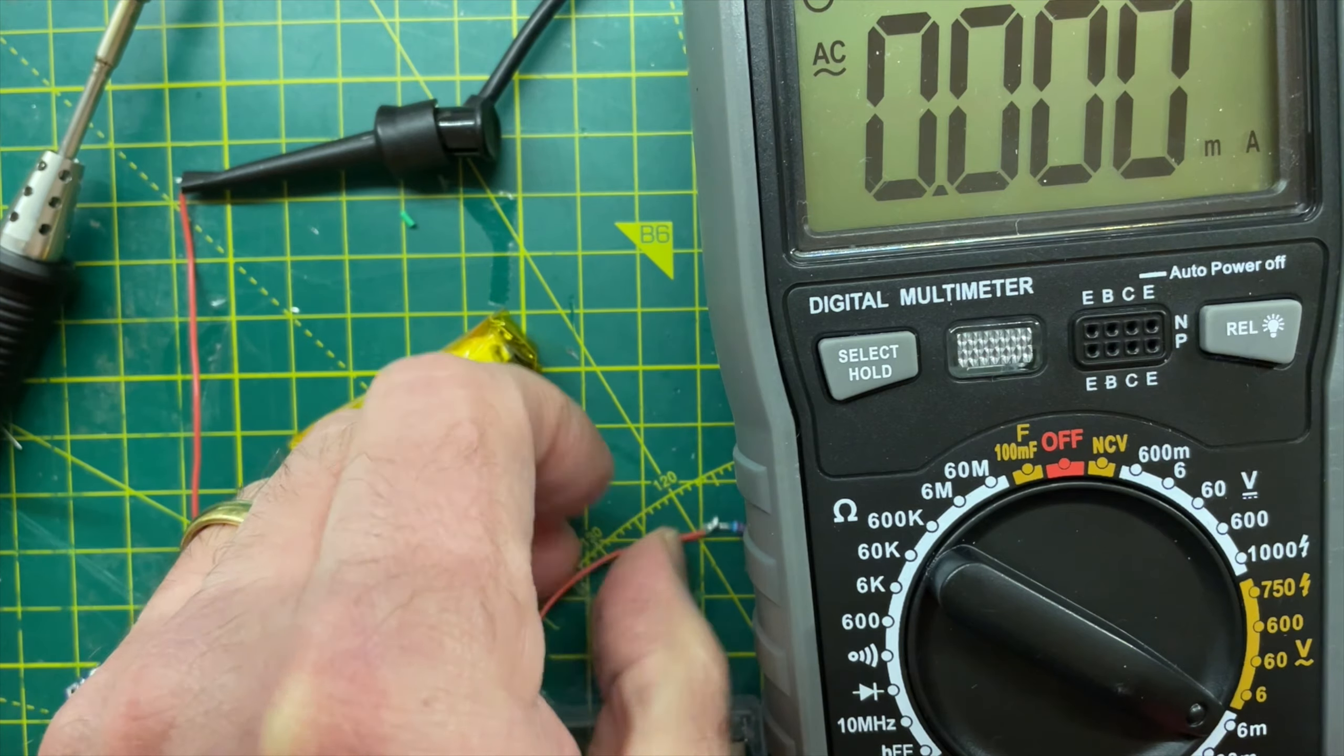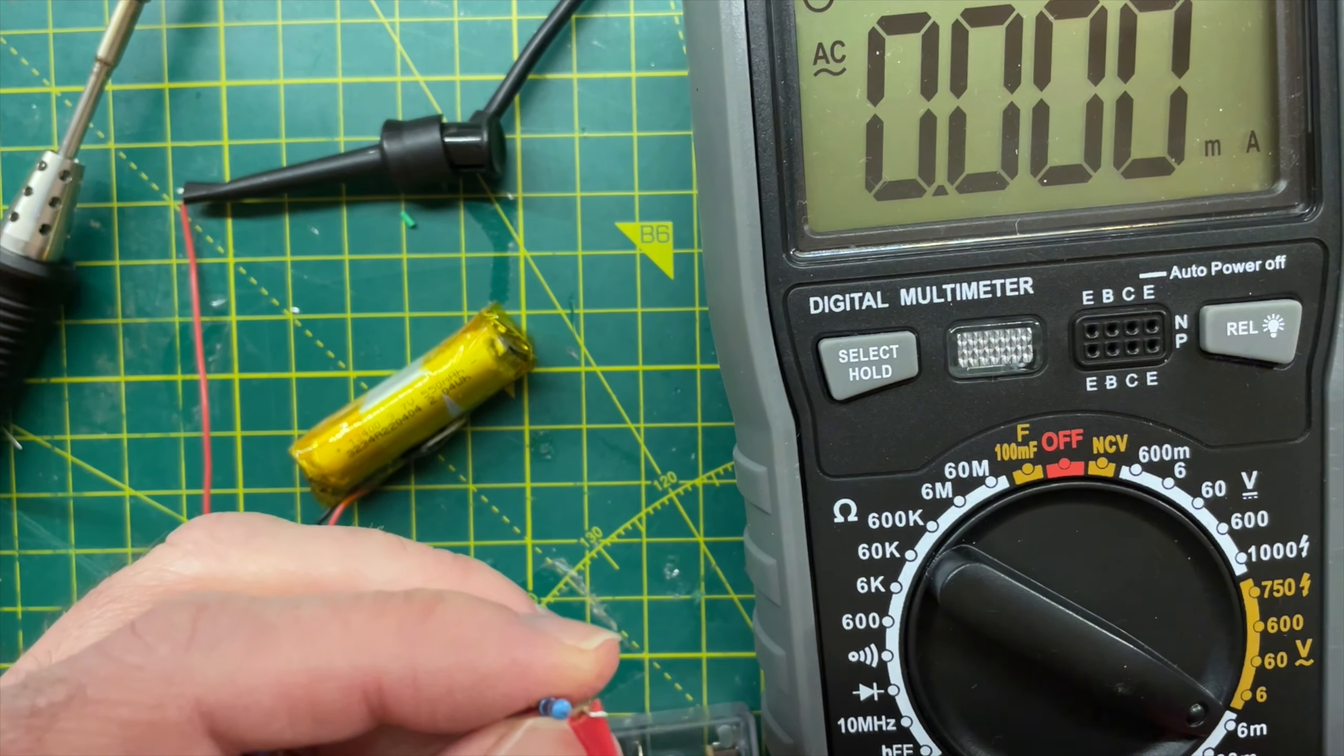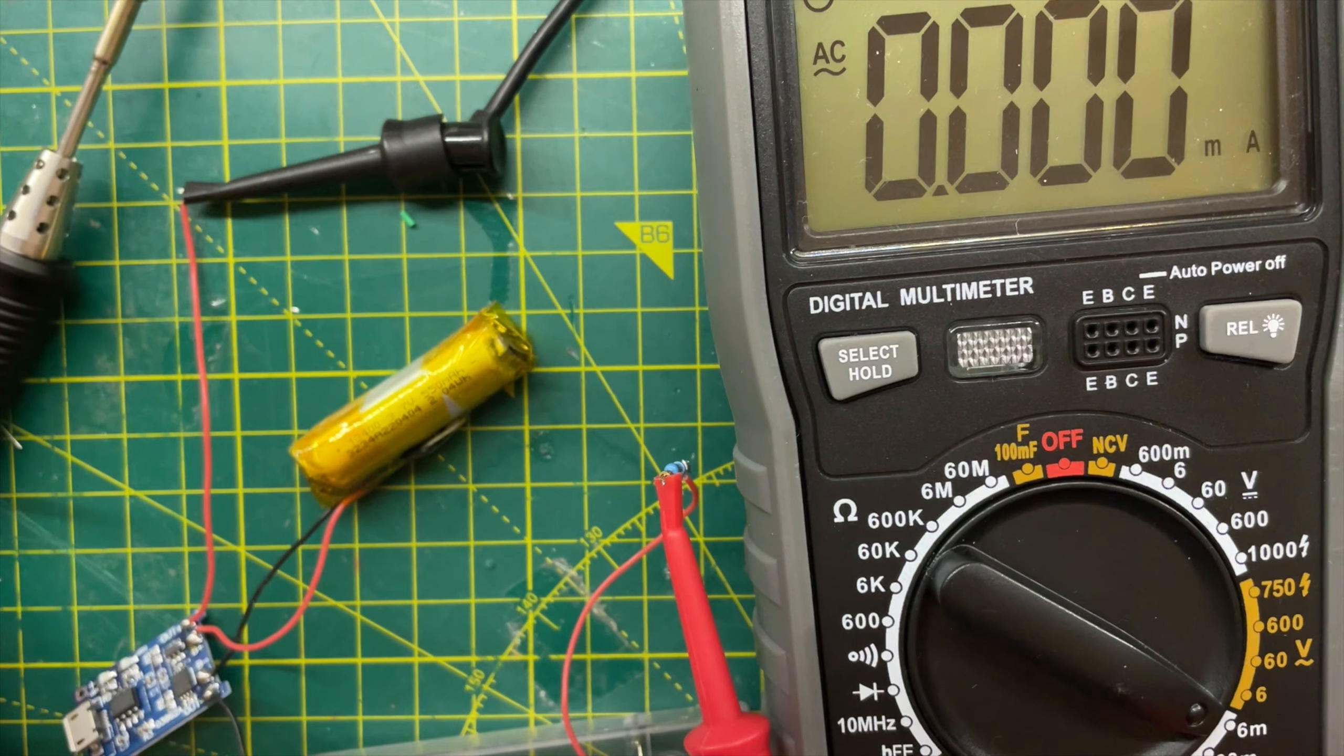And putting the multimeter in series with the circuit, there's no current flowing when the switch is off. So the wiring seems to be completely fine.